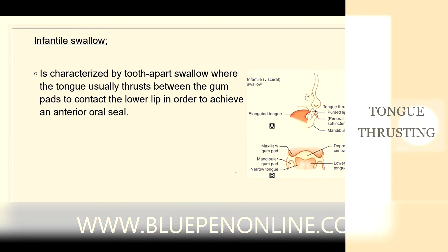Infantile swallower: it is characterized by a teeth-apart swallow, where the tongue usually thrusts between the gum pads to contact the lower lip in order to achieve an anterior oral seal.